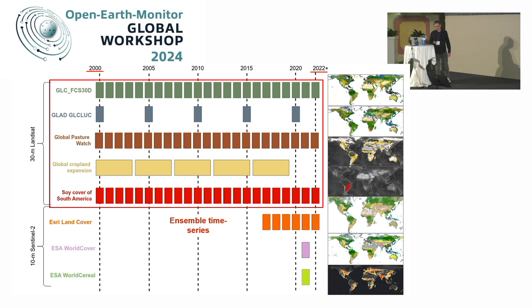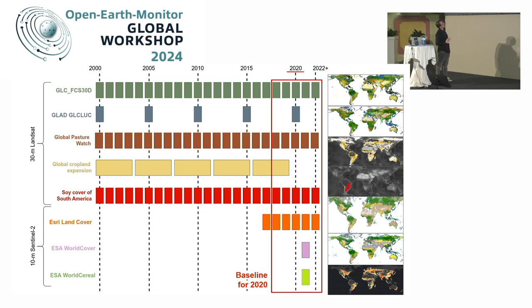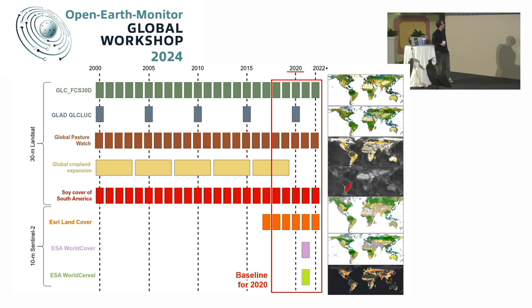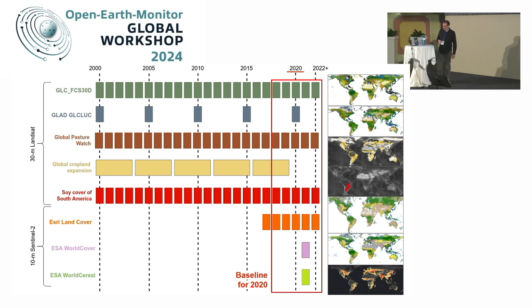Thinking about a baseline: imagine we want to harmonize and create a map only for 2020, combining all this data. This increases data availability and possibilities. We have the ESRI land cover map produced from 2018 onwards, the ESA World Cover maintained as part of the Copernicus program, and WorldCereal which has a dedicated talk here. All these products are available in different formats and platforms — sometimes in tiles — making integration difficult due to the large data volumes. Part of the effort here is to facilitate access to all these products.